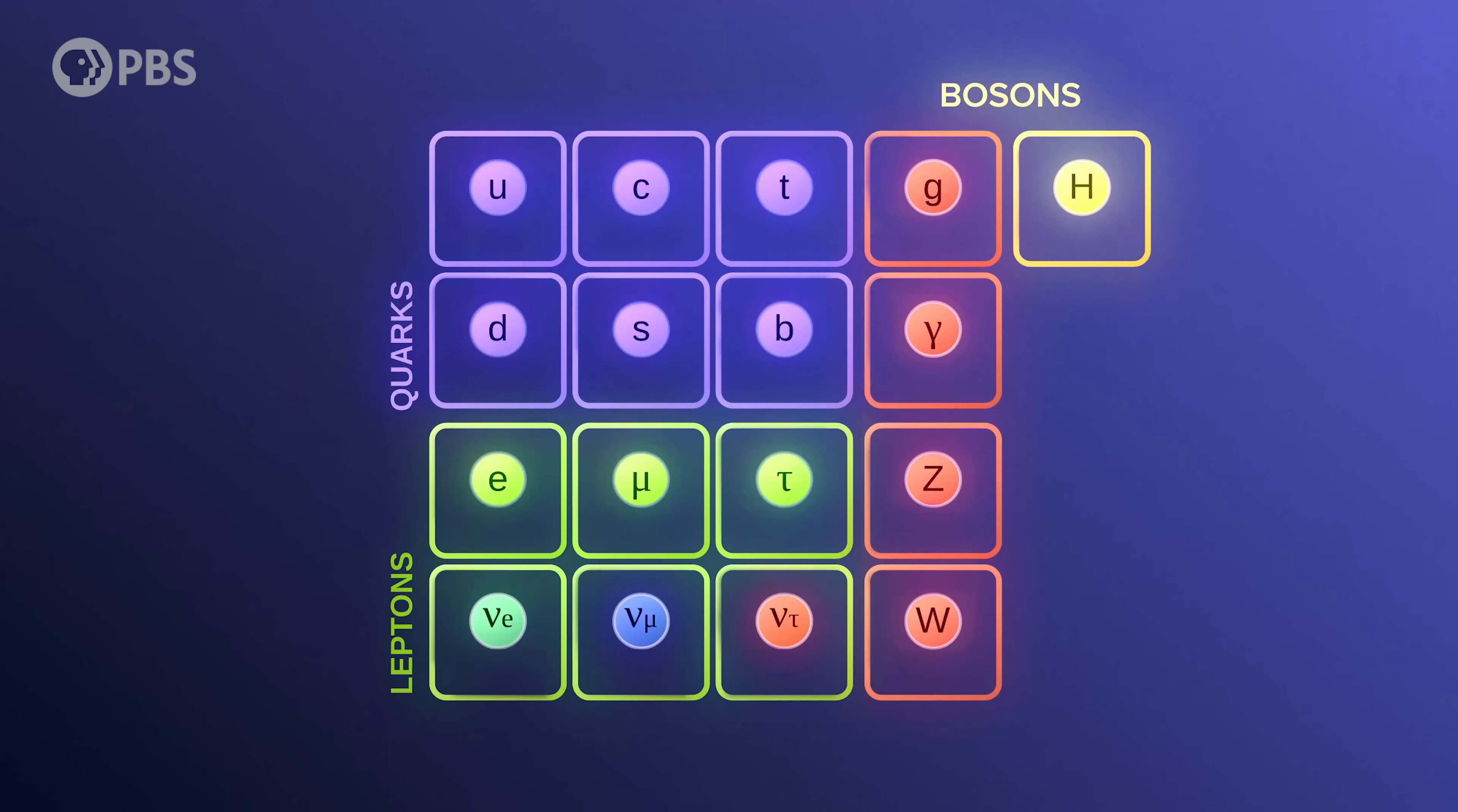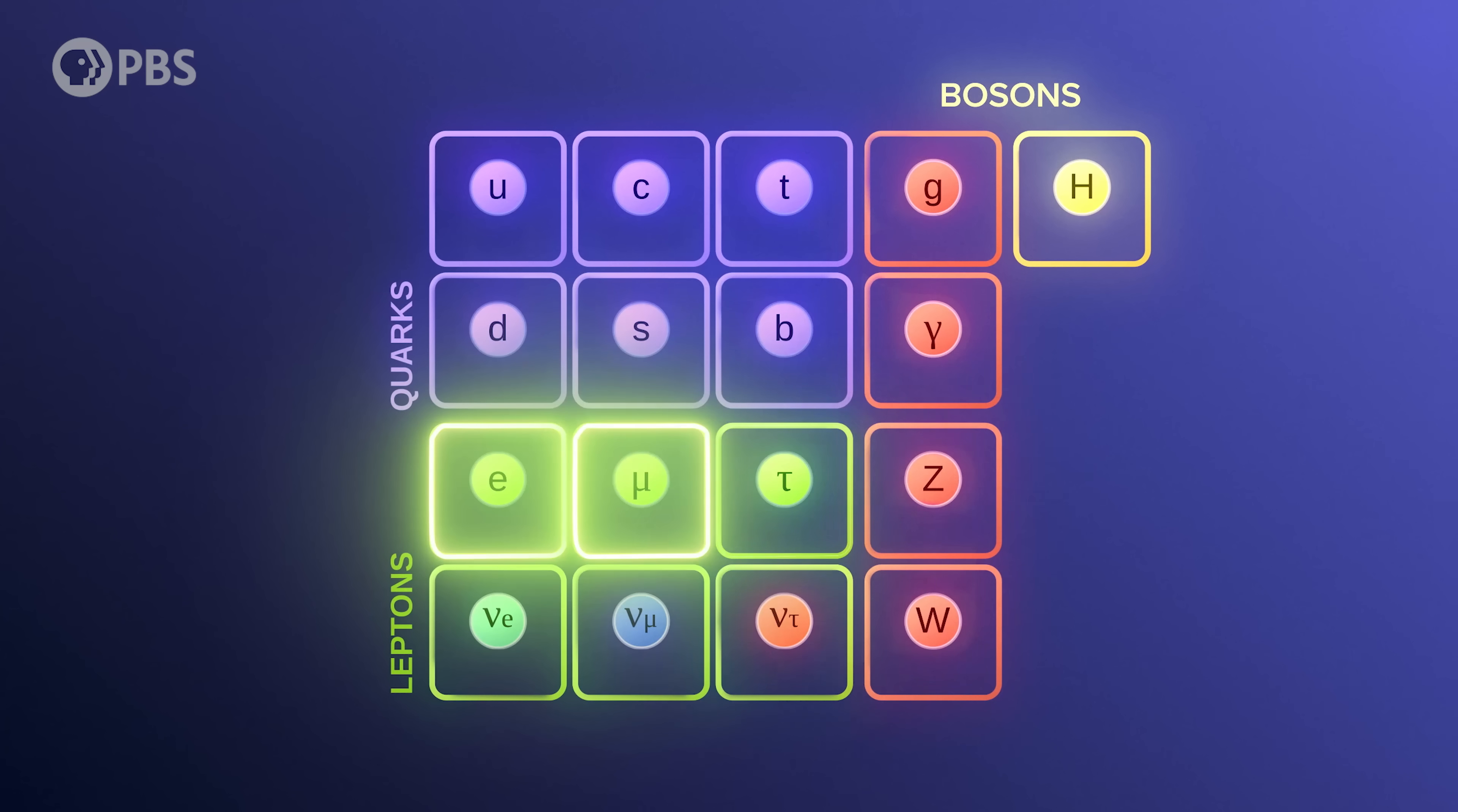Neutrinos are elementary particles of a type called leptons. That's the same family as the familiar electron and its heavier cousins, the muon and tau particle. Neutrinos also come in three flavors, one for each of the charged leptons.